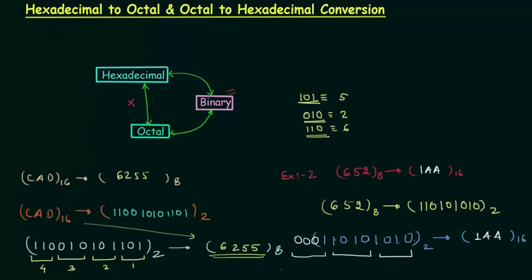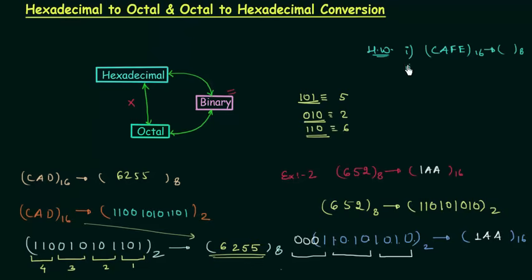Now we will move to the homework problems. I have two homework problems for you. In the first, you have to convert a hexadecimal number to octal, and in the second, you have to convert octal number 707 to hexadecimal. That is all for this presentation — see you in the next one.